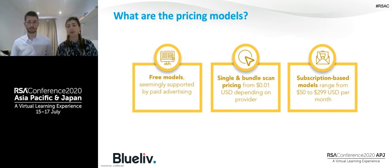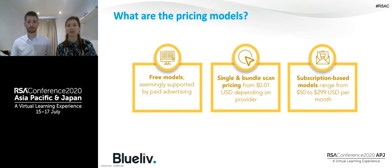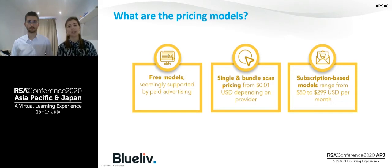Subscription models offer more flexibility — a combination of static scans, dynamic scans, and API access valid for a week or more. For Dyncheck specifically, subscription pricing ranged from $50 to nearly $300 US dollars per month depending on features and duration.